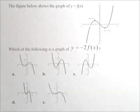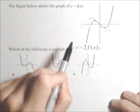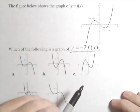In this video, we're going to look at doing a transformation graphically of a function. We have our function here, it looks like about a cubic, and that's f(x). We want to identify the graph of y = -2f(x).